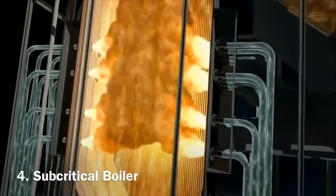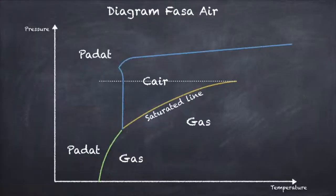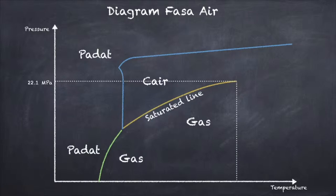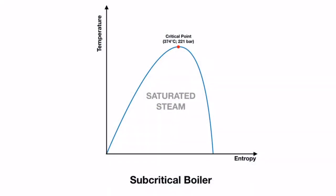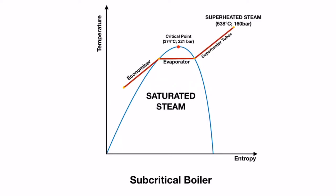Subcritical boiler. The critical point of a boiler is the condition where boiler steam reaches a temperature of 560 degrees Celsius at a pressure of 221 bar. If a boiler works below these conditions, it is called a subcritical boiler. Subcritical boilers are typically designed to work at 160 bar and a steam temperature of 538 degrees Celsius.